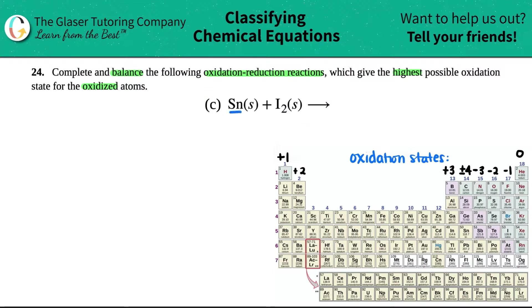So in this case, we have tin, which is Sn, that's a metal, it's a solid, mixing with iodide. Iodide is I2, it's a diatomic, and that's a solid. So I'm just going to write this over here. I have Sn tin, which is a solid, plus I2.